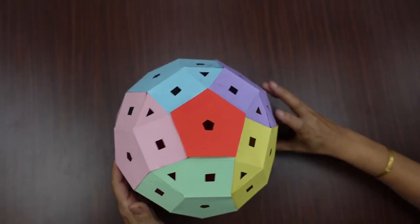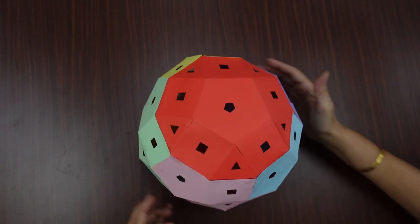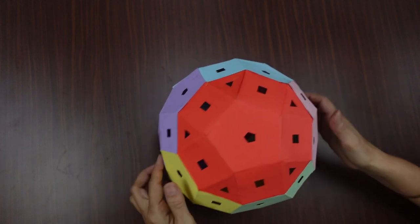Thus when all the flaps are joined to the side flaps we see the rhombicosidodecahedron formed.